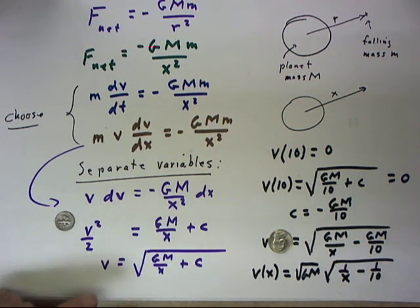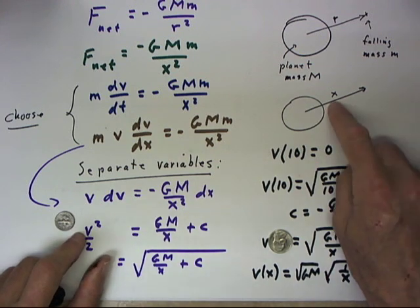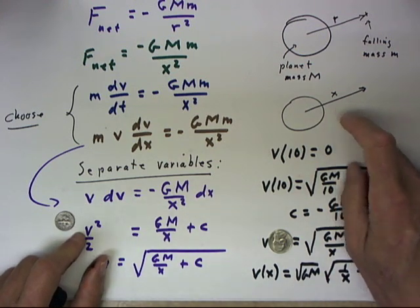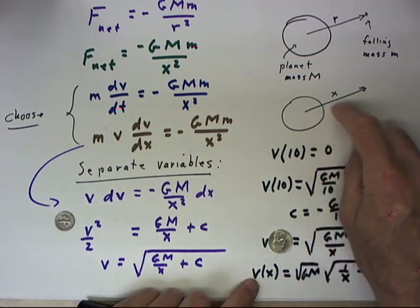With this function, we could answer the question of how fast this object is moving when it's a given distance from the planet.